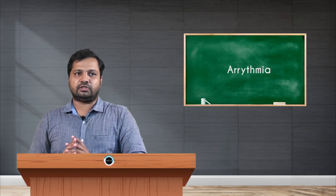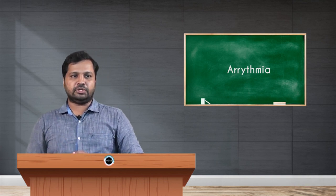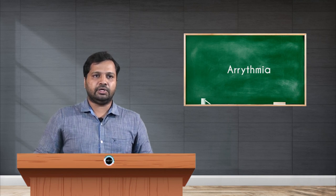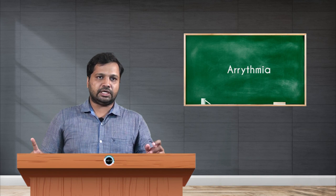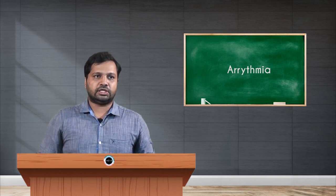Fourth, atrial flutter — rapid and ineffective atrial contraction caused by ectopic foci arising from the atrial musculature, leading to ineffective atrial contractions. Fifth, atrial fibrillation — rapid and irregular atrial contraction, with a heart rate around 300 to 400 beats per minute. Sixth, ventricular fibrillation — rapid and irregular twitching of the ventricle, which leads to a dangerous cardiac arrhythmia. These are some of the ectopic arrhythmia conditions seen in the pathological state of an individual.